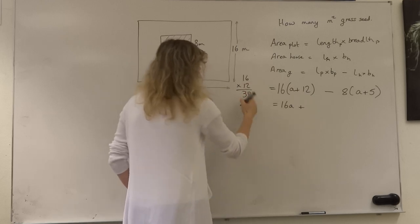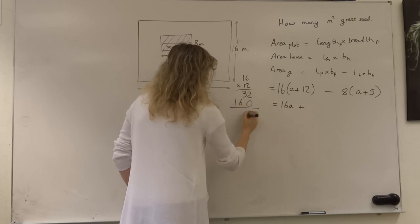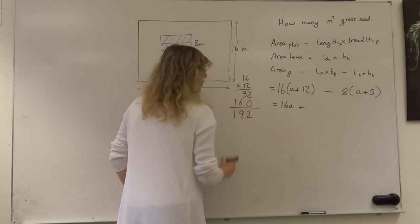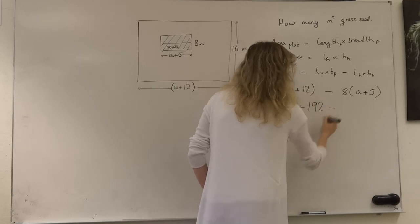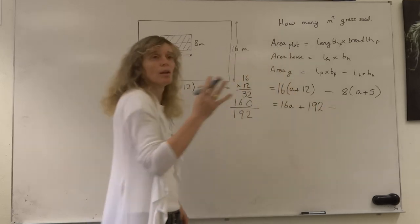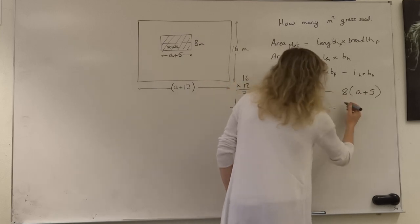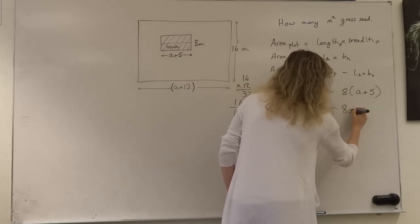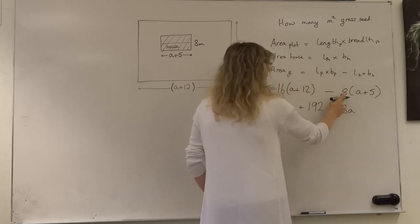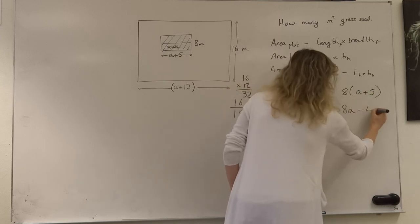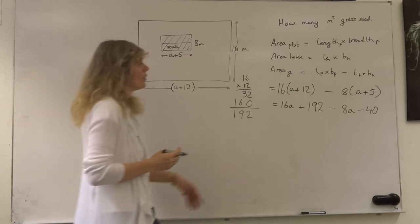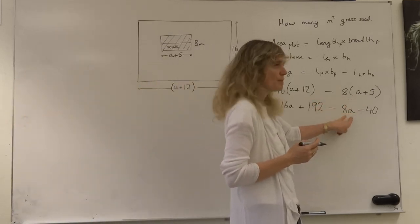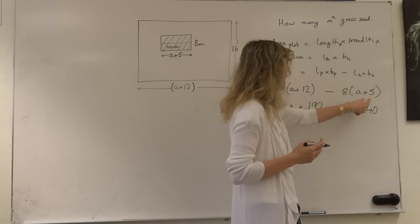Minus the area of the house: 8 times a minus 8 times 5, which is 40. So when we expand our brackets out, we get minus 8 times a, which would give us minus 8a, and minus 8 times 5, which gives us minus 40.